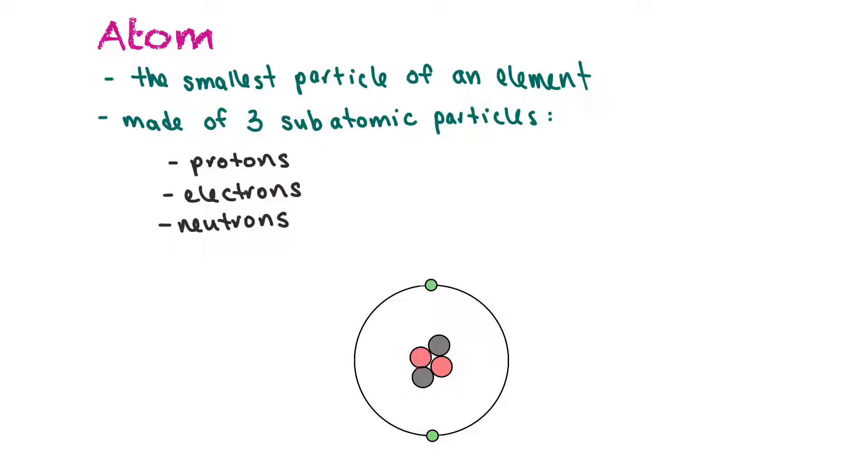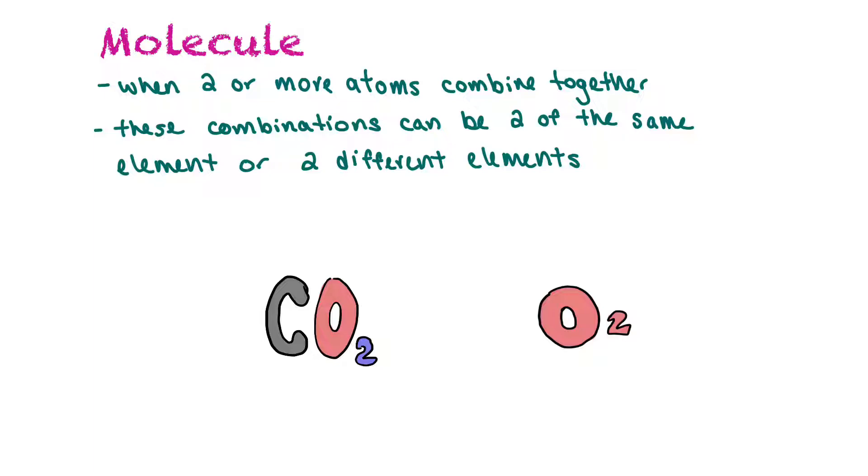Remember, an atom is the smallest particle of an element and it's made of three subatomic particles: protons which are found in the nucleus, electrons which orbit the nucleus, and neutrons which are also found in the nucleus.